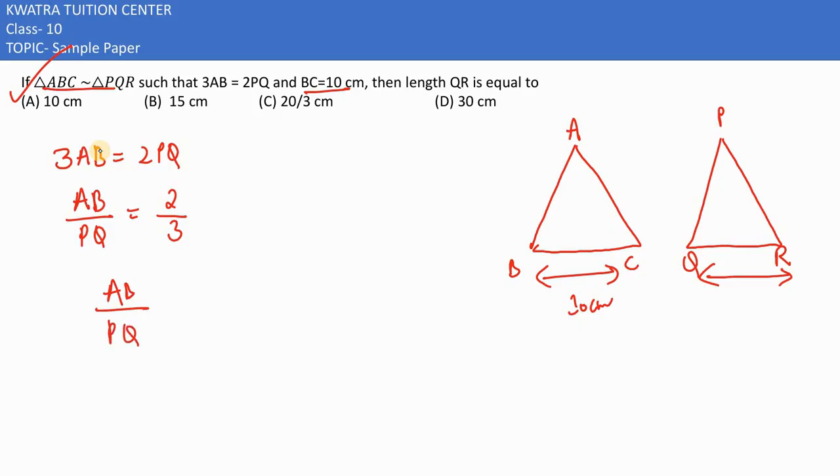AB opposite PQ, BC's opposite QR. AB by PQ, 2 by 3, so this is 2 by 3 left side. BC is known to us, which is 10, and what is QR?